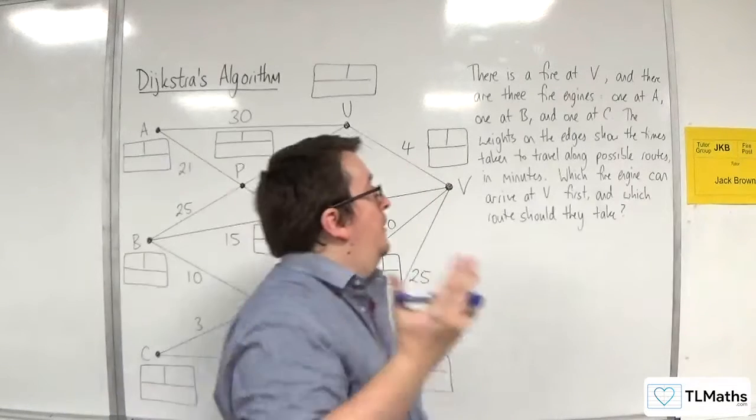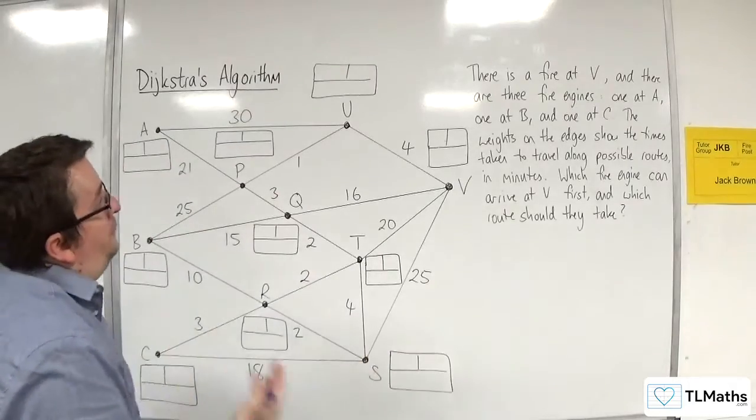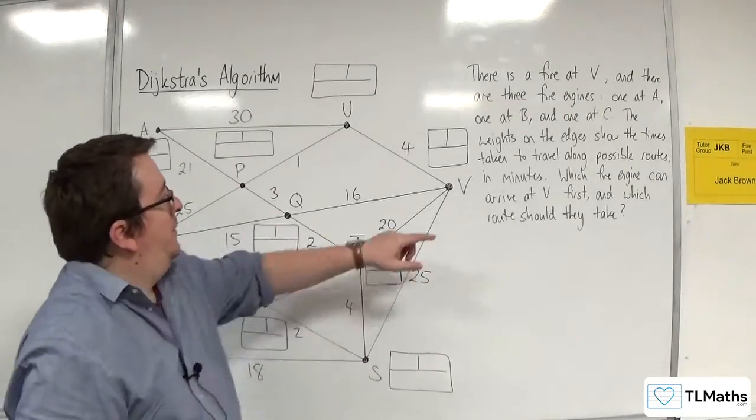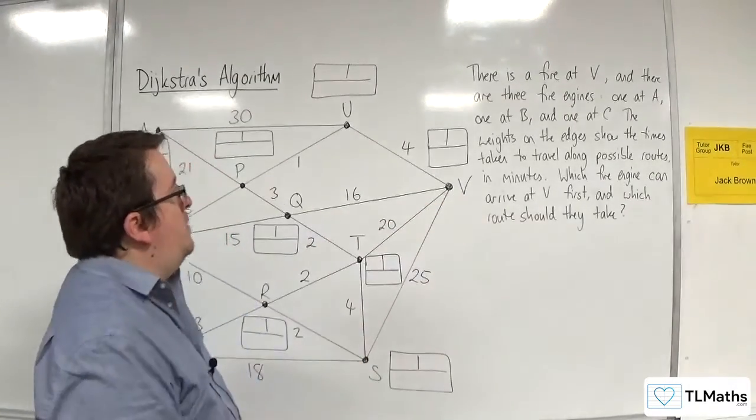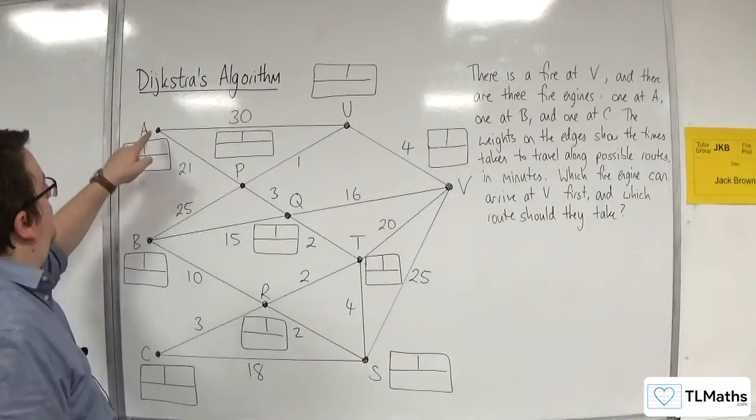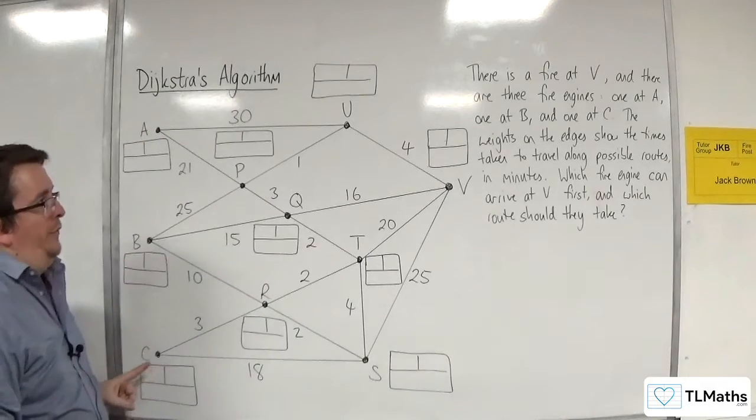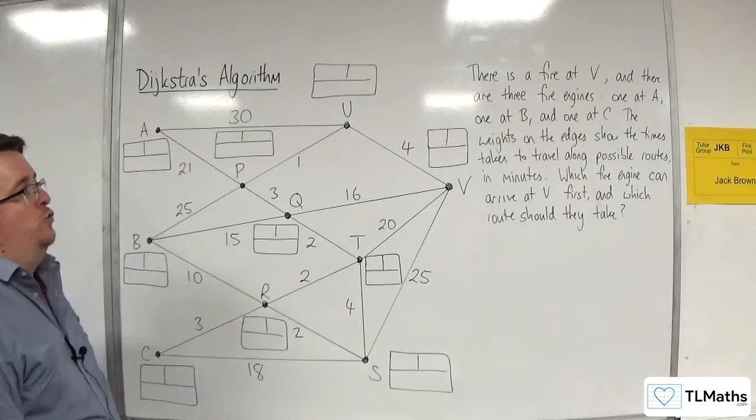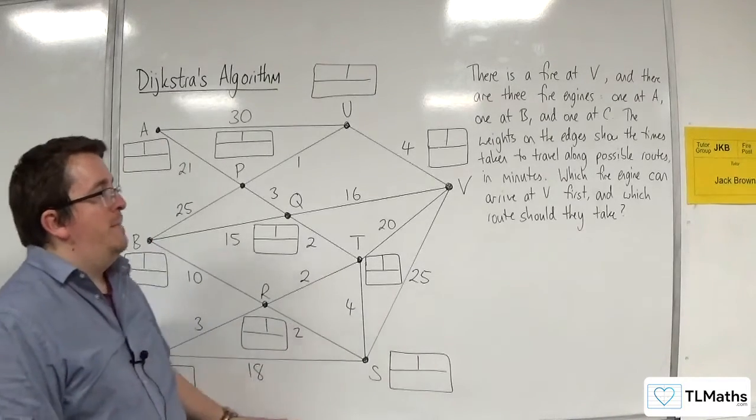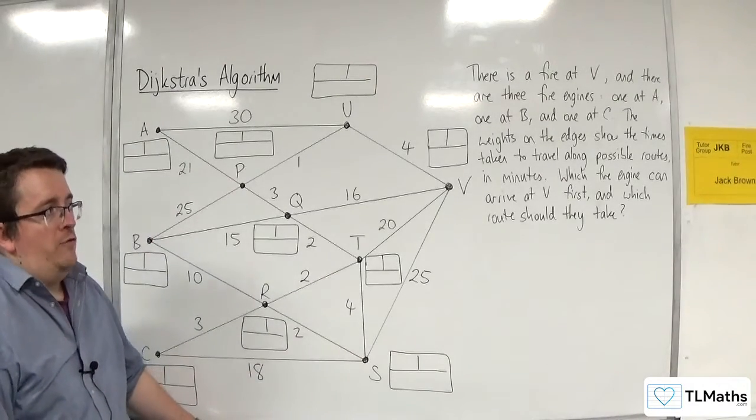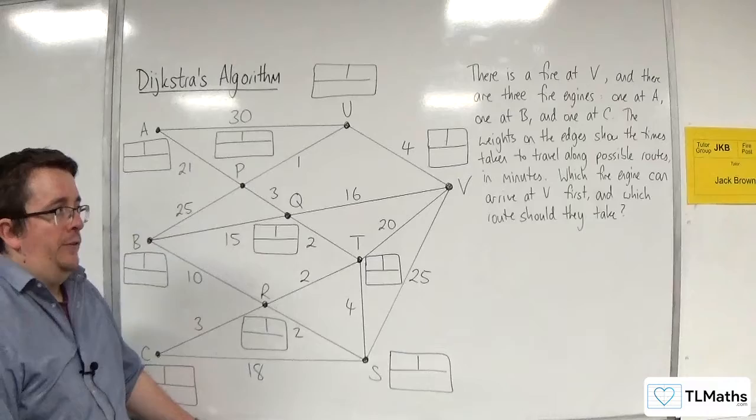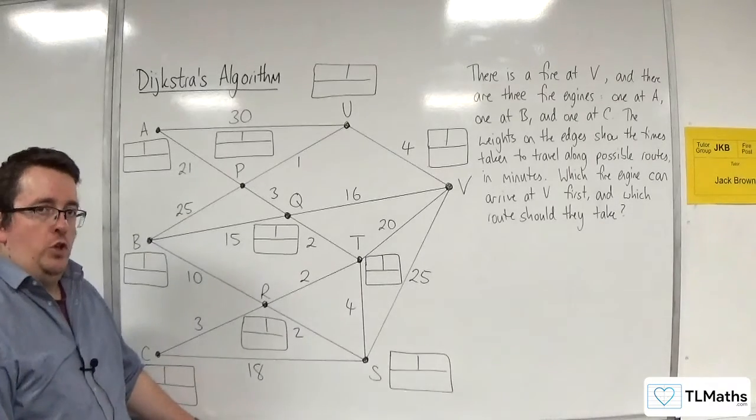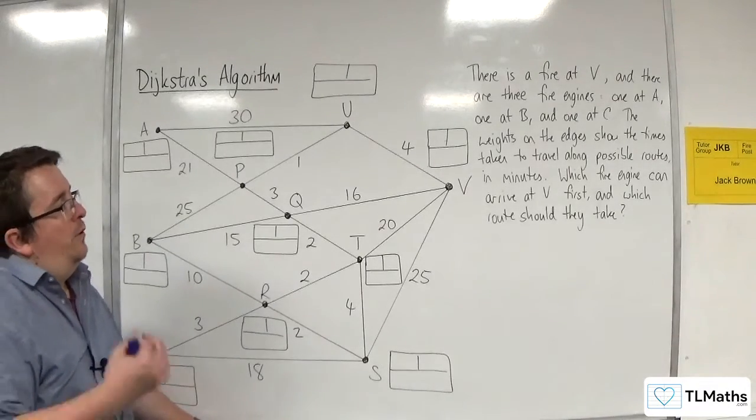In this video, we're going to look at this problem where there is a fire at V, and there are three fire engines, one at A, one at B, and one at C. The weights on the edges show the times taken to travel along possible routes in minutes.